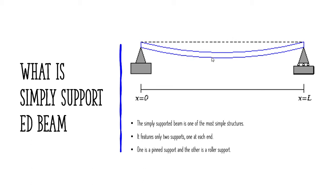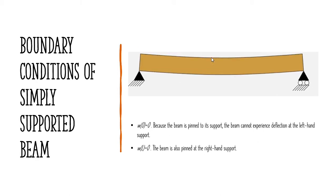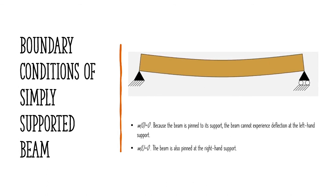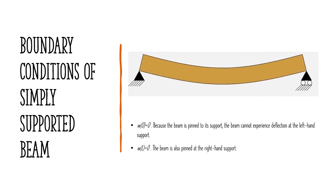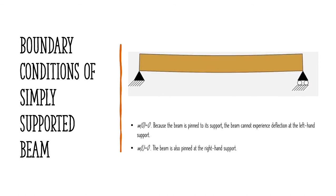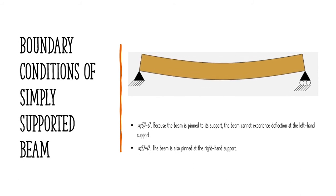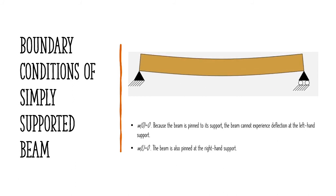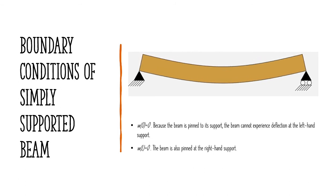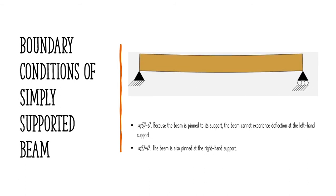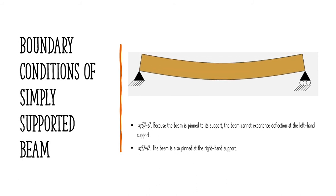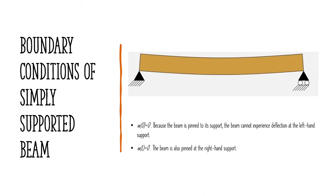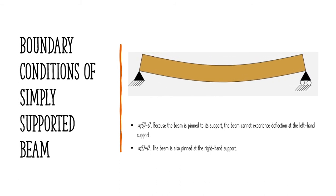This is what occurs in a simply supported beam. A practical simply supported beam can be made at home by keeping a ruler scale on two supports and applying a force at the midpoint of the scale. It undergoes some deflection, and the deflection is zero at the end points — that is at the pinned point and the roller support point — and it is maximum at the midpoint.